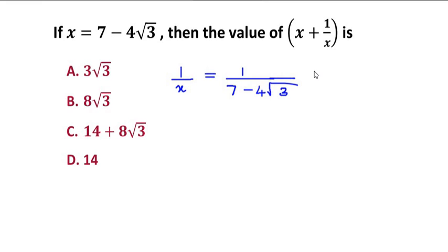So conjugate in the sense, if it is 7 minus, then it becomes 7 plus 4 radical 3 over 7 plus 4 radical 3.